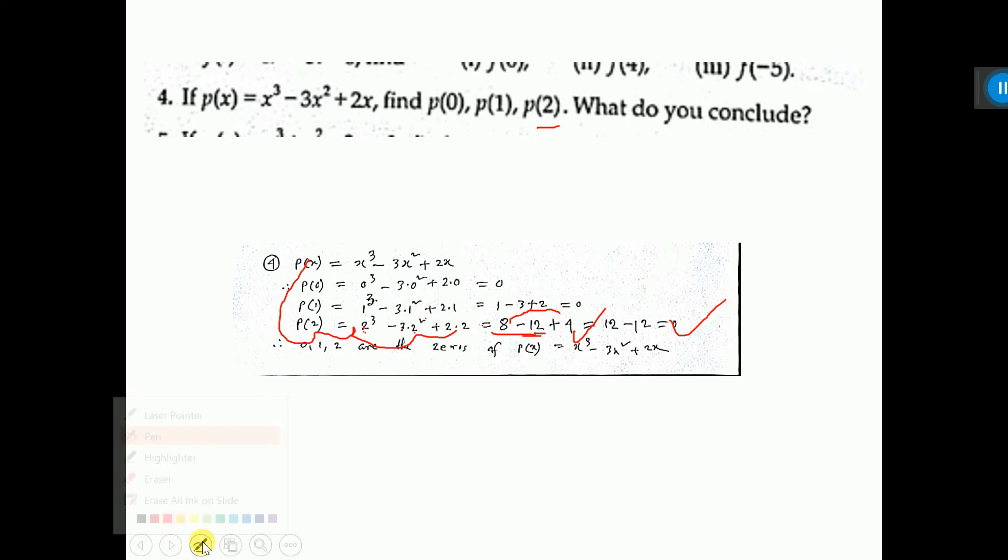That means the answer you are getting 0. Now, since 0, 1, 2 are the zeros, therefore, since we have got 0, 0 and 0, therefore, this 0, 1 and 2 are the zeros of the polynomial P(x). So, this is the conclusion.